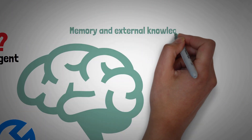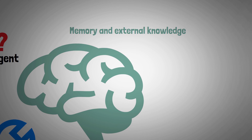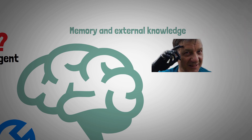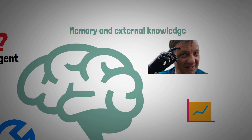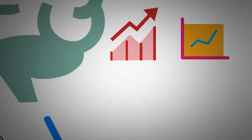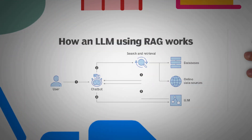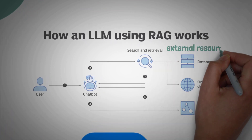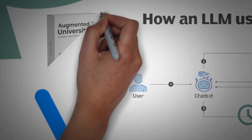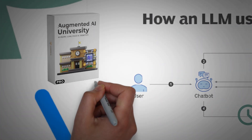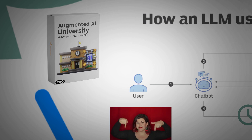Memory and external knowledge: AI agents have superhuman memory. They can store and access specific knowledge, such as your company's data or market research. Using techniques like retrieval augmented generation, or RAG, they integrate external resources into their responses, making your results more up-to-date and relevant.